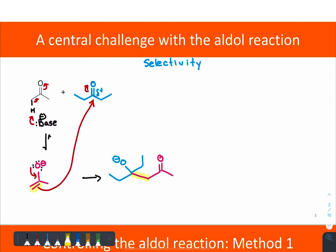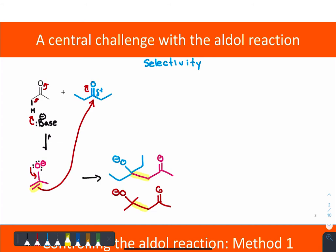Those pi bonds have formed that new carbon-carbon bond. Here's where the challenge in selectivity comes in. All these molecules are mixing together, so that enolate, when it reacted, might have reacted not only with the blue ketone — the diethyl ketone — but it could alternatively have reacted with another molecule of the dimethyl ketone, or acetone.